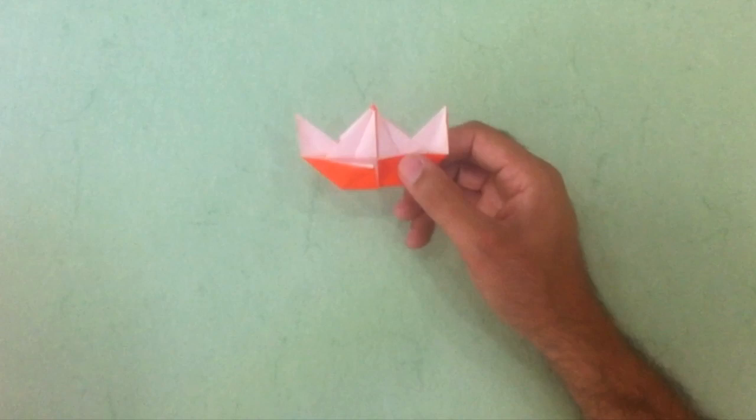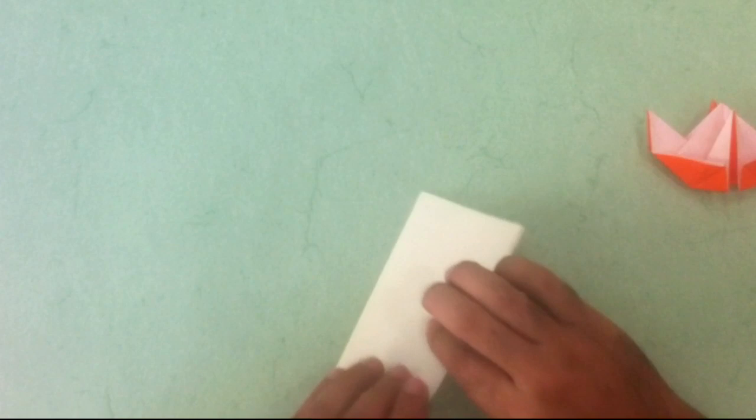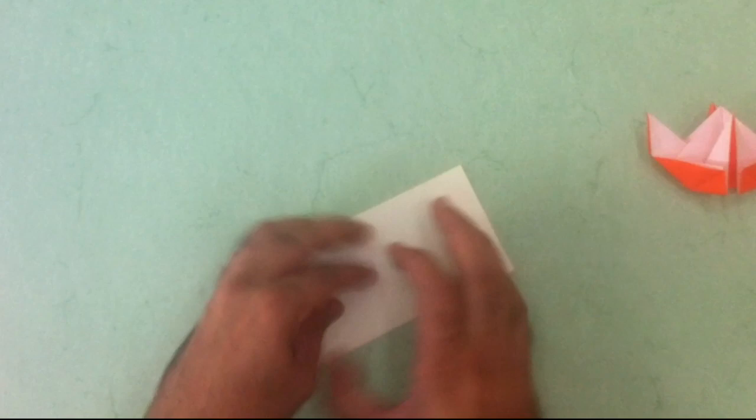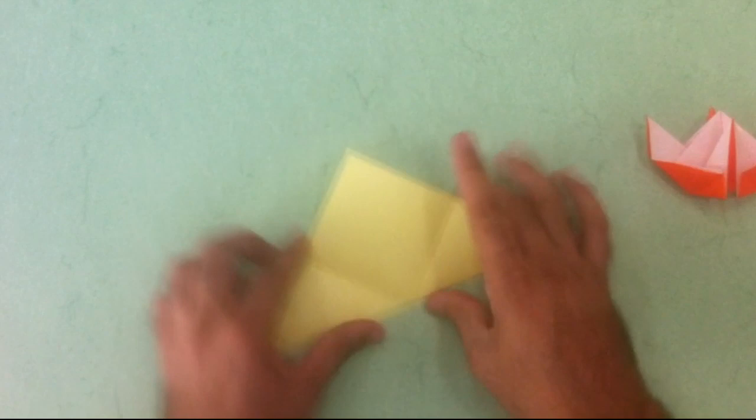So we need eight. Let me do just another one very quickly for you. Color side up. Half. And again. Turn it over. Diagonals. The other one.